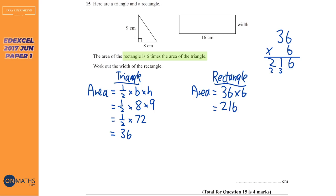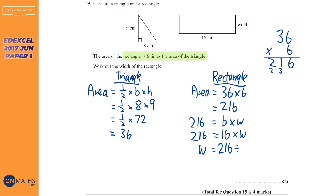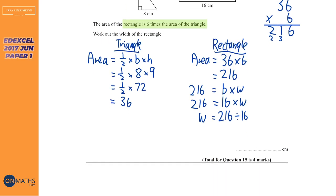So that gives us 216. Now for the difficult bit: we know the area is 216 and we know it is base times width. We're given the base which is 16, but we don't know what the width is. We need to do 216 divided by 16, which is not going to be easy. I'm going to use short division — the bus stop method — and I'll write out the 16 times table to help.